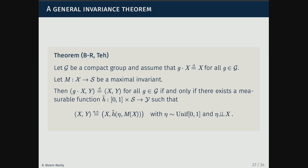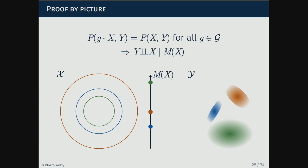There's also an object called a maximal equivariant, which sets up a frame of reference used for the equivariant representation. The general theorem — analogous to the permutation case — is that for a compact group G, rather than exchangeability we have X invariant under the group action. For any maximal invariant M (the object corresponding to the empirical measure), we can find a representation of X and Y in terms of X and a function of the maximal invariant plus random noise.